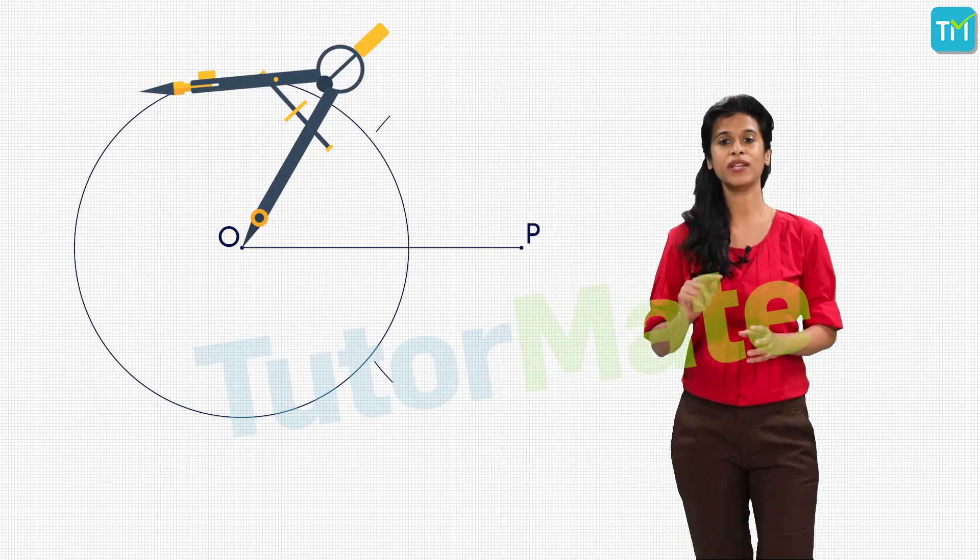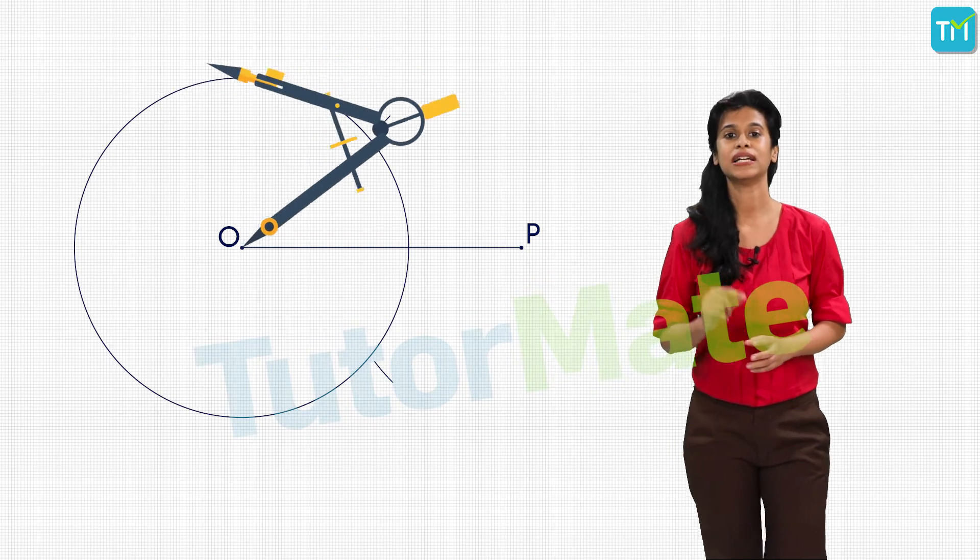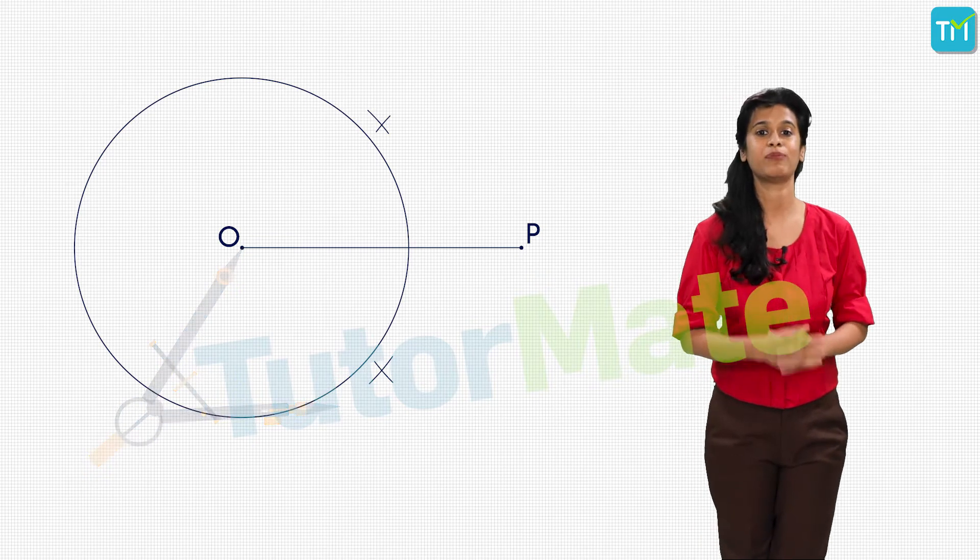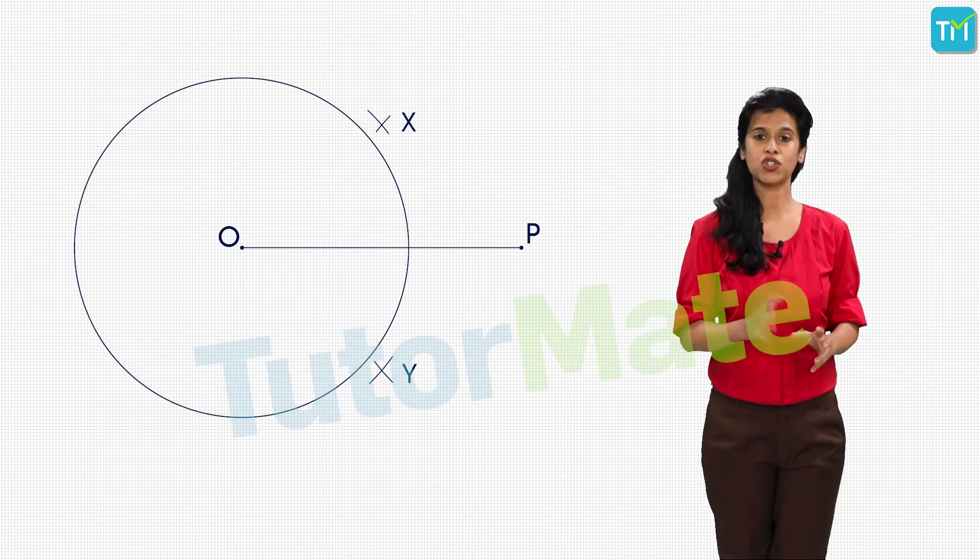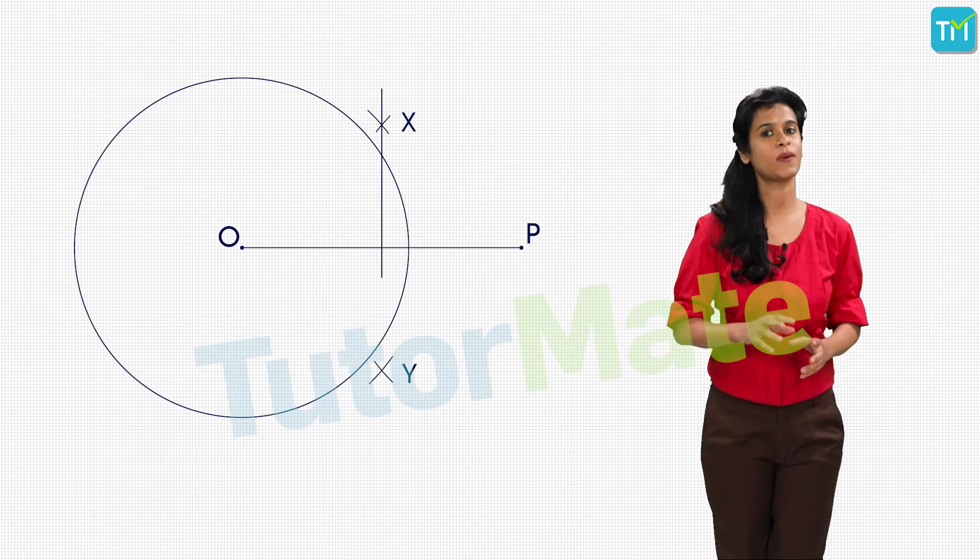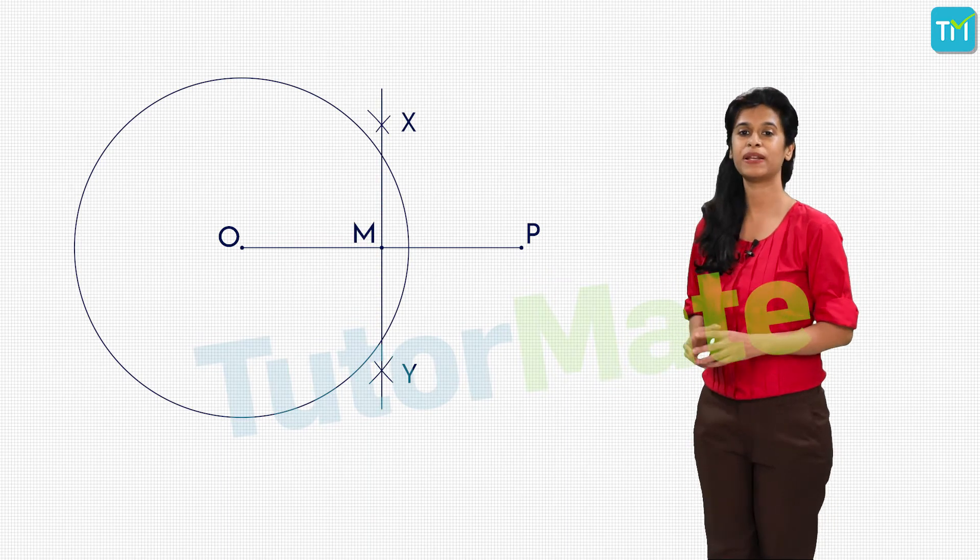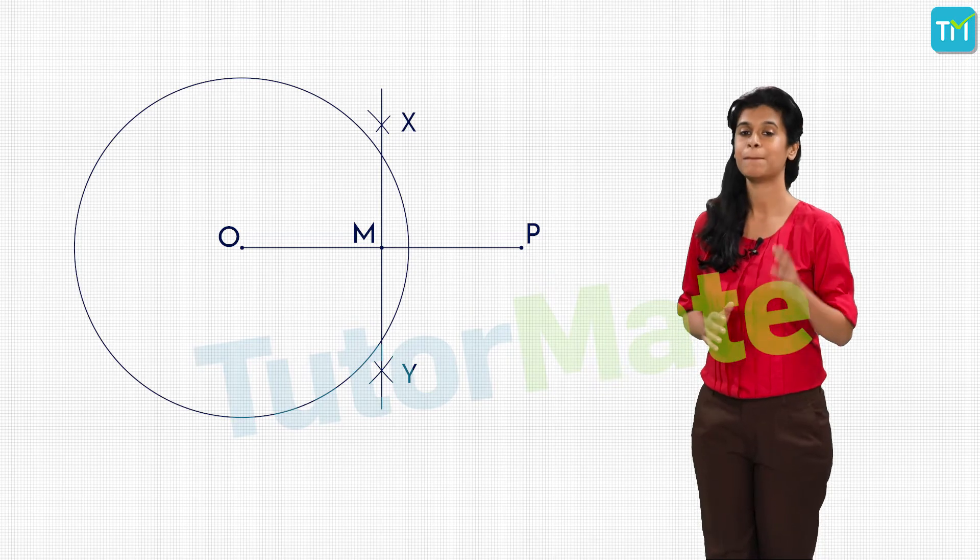Let the arcs intersect at point X and Y. Join XY. Let XY cut OP at M. So we have XY as the perpendicular bisector of OP, bisecting it at M. All good?